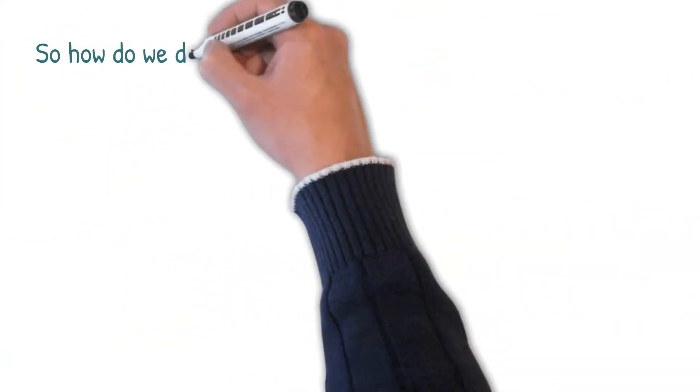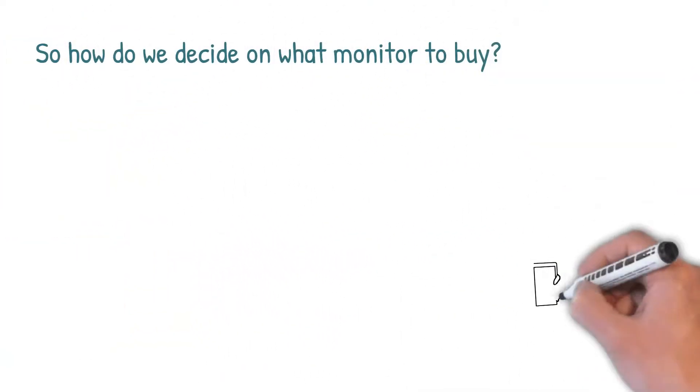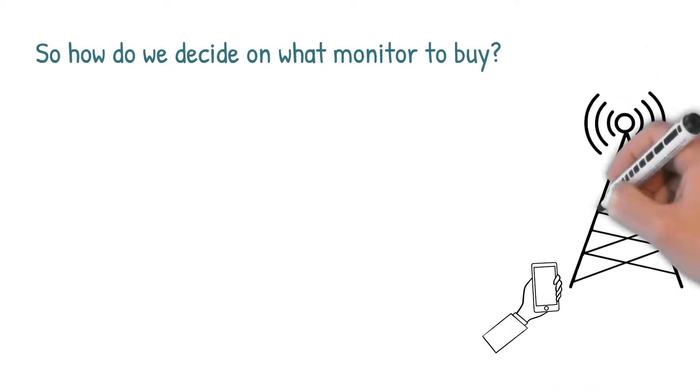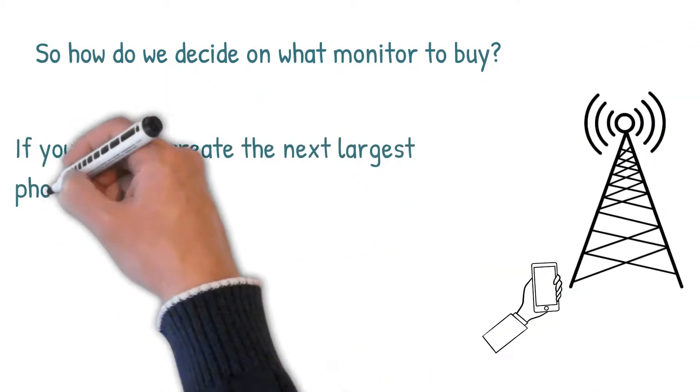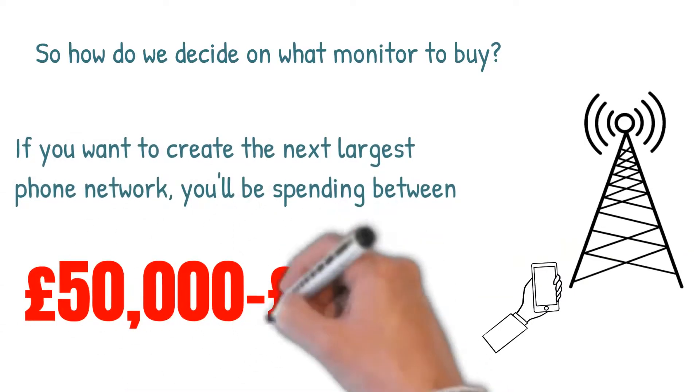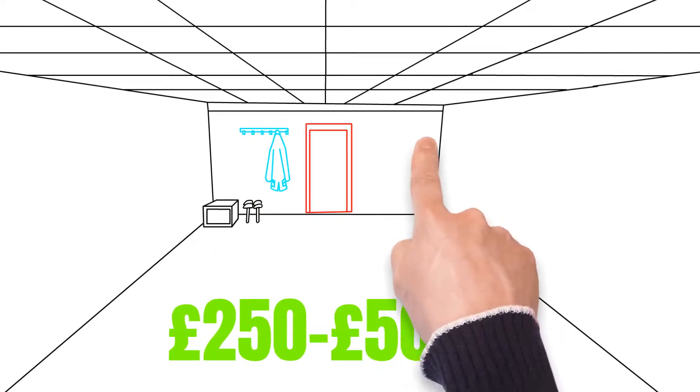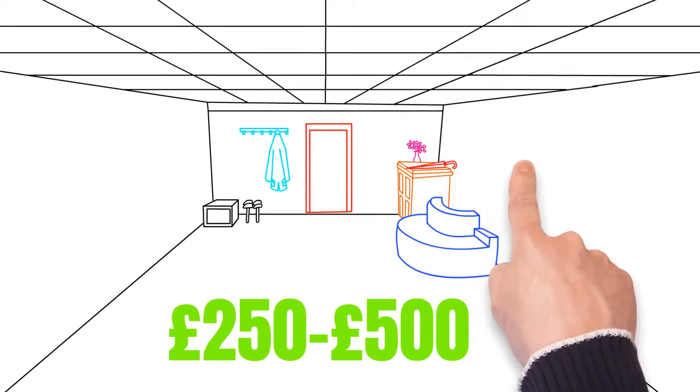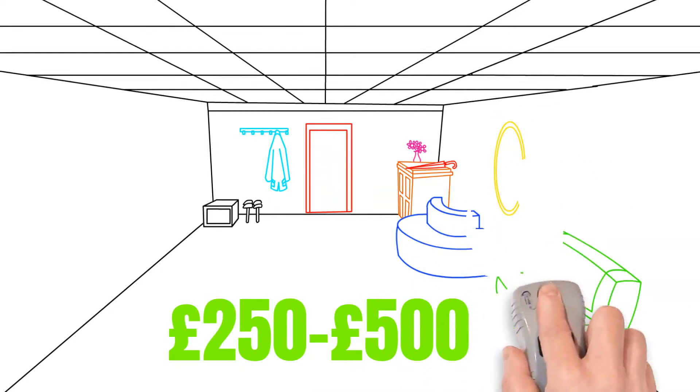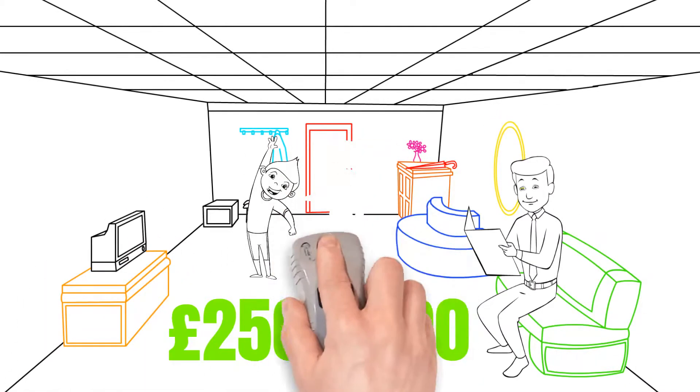So how do we decide on what monitor to buy? Well, first of all, if you want super high pinpoint accuracy to build the next mobile phone network, then you need a £50,000-60,000 spectrum analyzer. If you just want to keep you and your kids safe, you need to spend somewhere between £250 and £500. Anything above that would be a waste of money, and below that you're probably not going to get the accuracy and cover all the frequencies you need to measure.